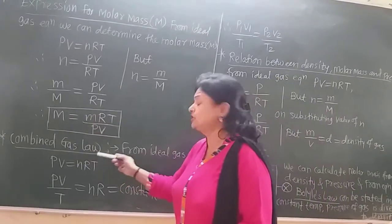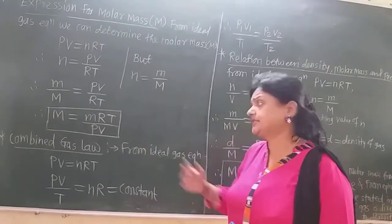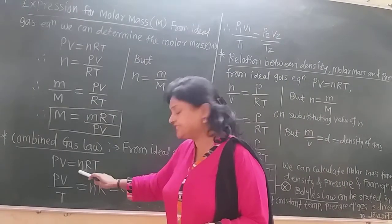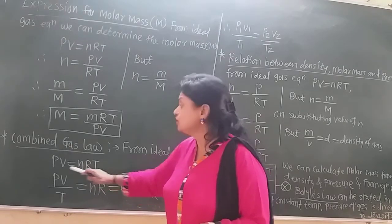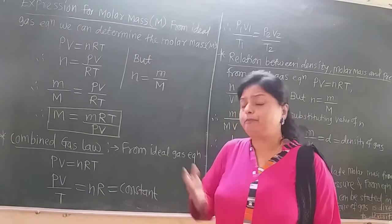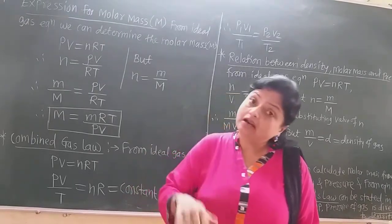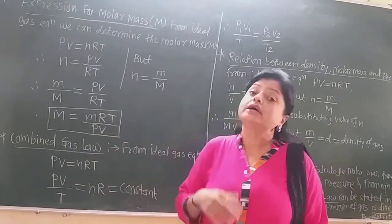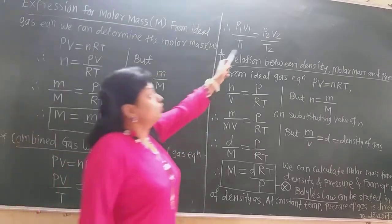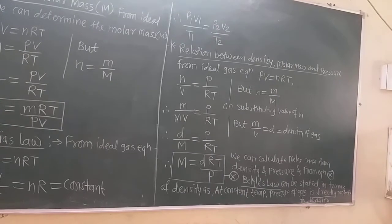Let us revisit the combined gas law. From the ideal gas equation PV = nRT, if number of moles and R are constant, then PV/T = nR = constant. If the initial state is P1, V1, T1 and the final state is P2, V2, T2, we can write P1V1/T1 = P2V2/T2, and this can be generalized as P3V3/T3 = constant.